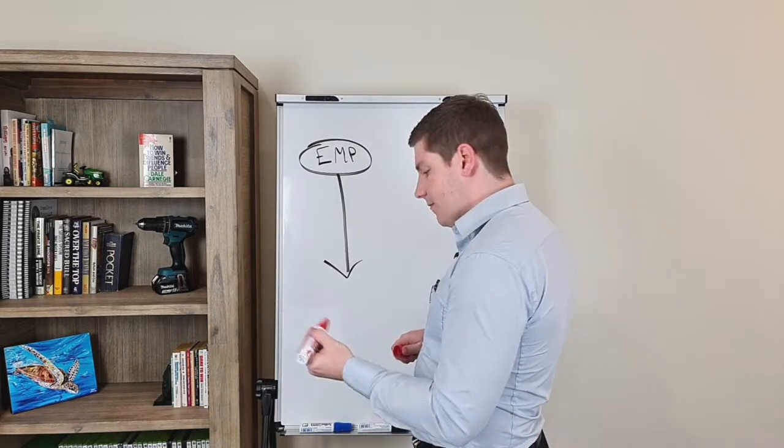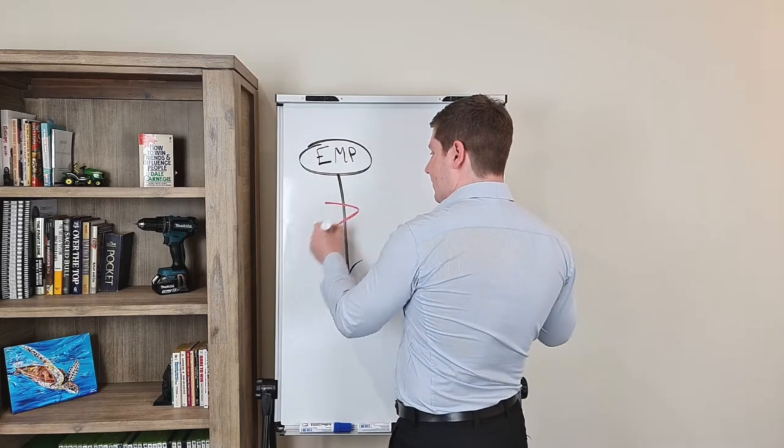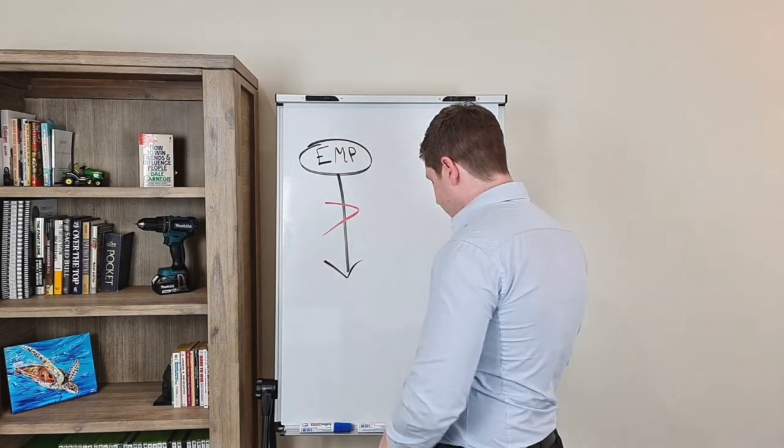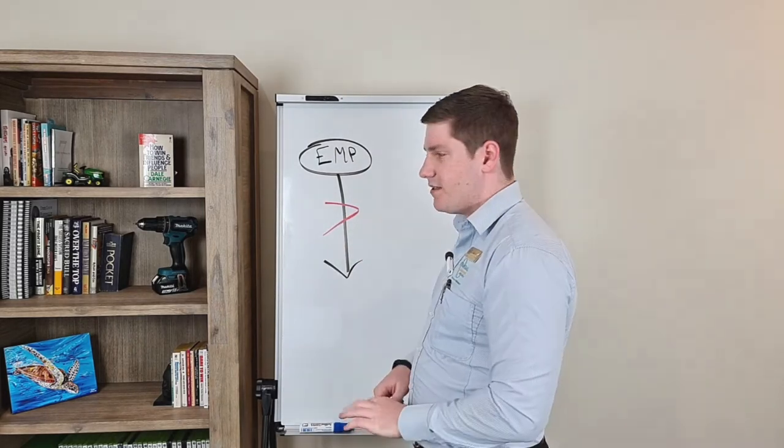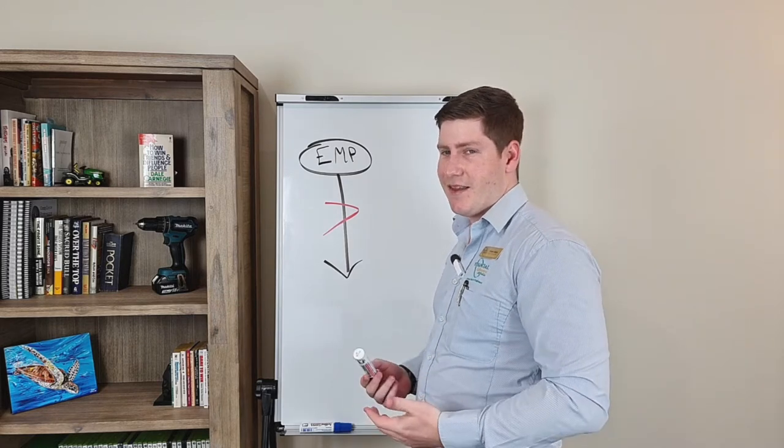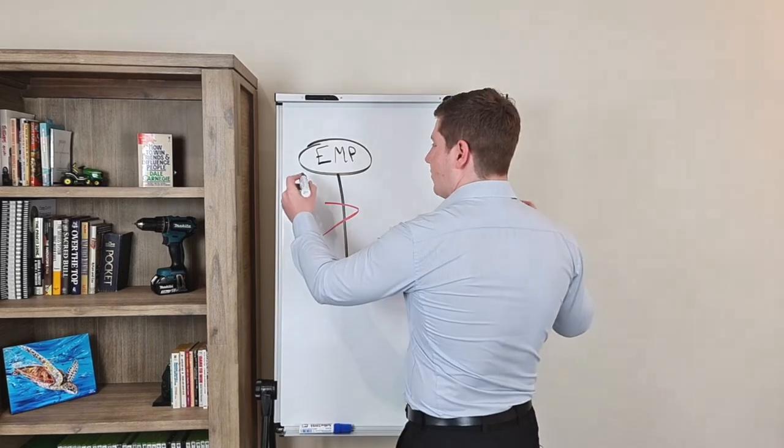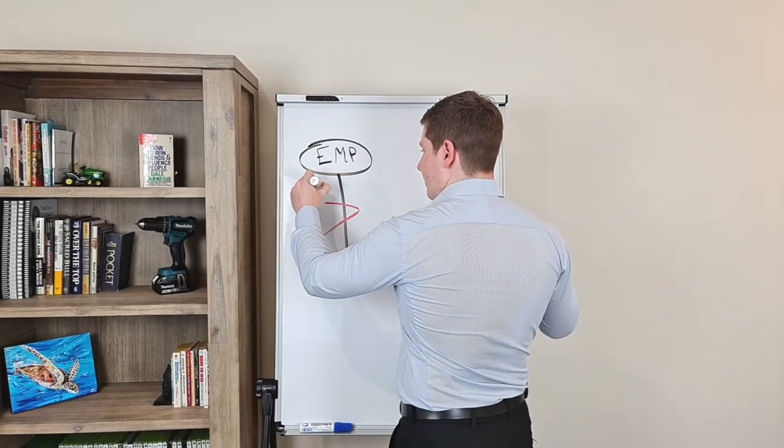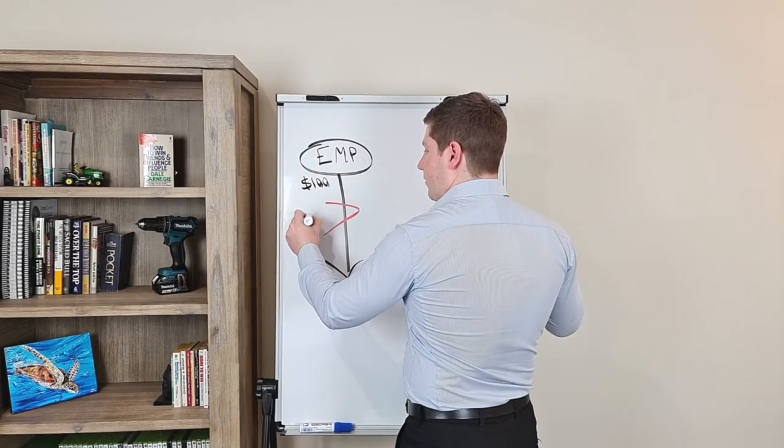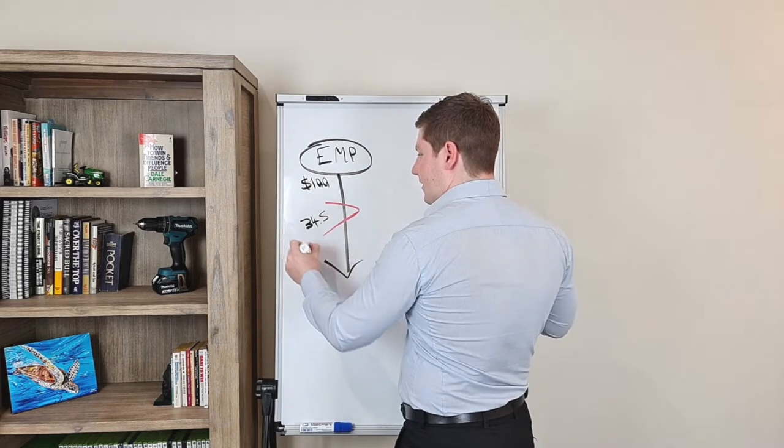Then from there, tax man comes in and takes his slice out of the cake. And so, for a lot of people, if you earn somewhere between $37,000 and $90,000, the average amount of tax you're paying is somewhere around a third. So for every $100 you earn, you pay about $34.50 in tax.